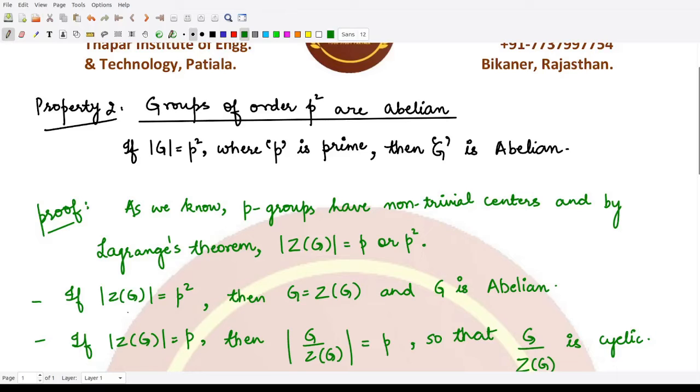...then the group G is basically equal to Z(G), because G also has order p² and Z(G) also has order p², so they are the same group. And basically because Z(G) contains all those elements which commute with all other elements of G, in that case the group G becomes abelian.